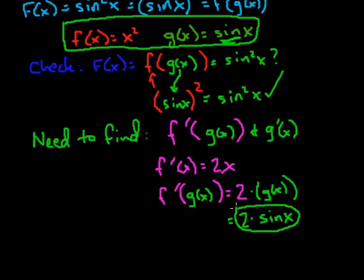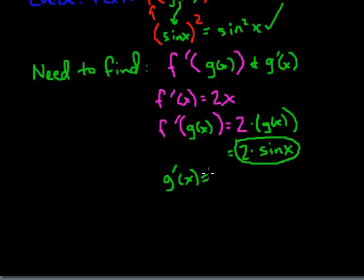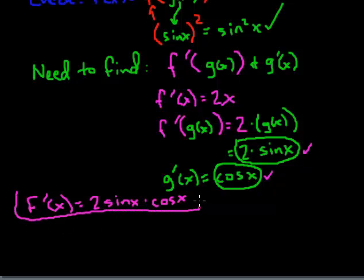Now we need to find g prime of x, which is the easier part — it's just the derivative of g. The derivative of sine is cosine. So the chain rule tells us to multiply those two parts together: capital F prime of x equals f prime of g of x times g prime of x, which gives us 2 sine of x times cosine of x. That's the derivative of our function in the first example.